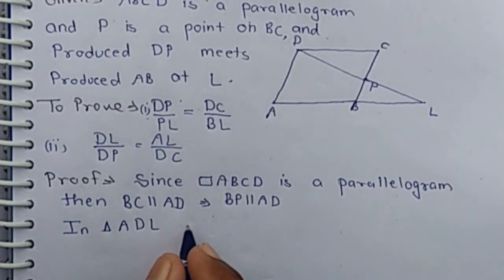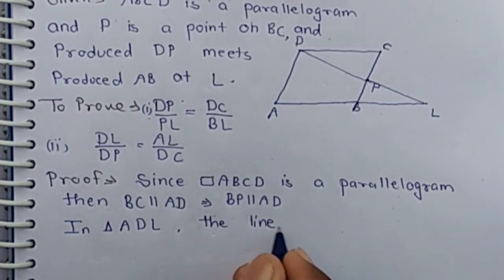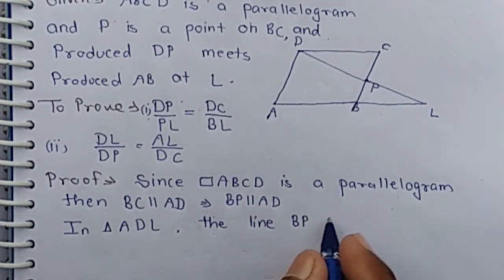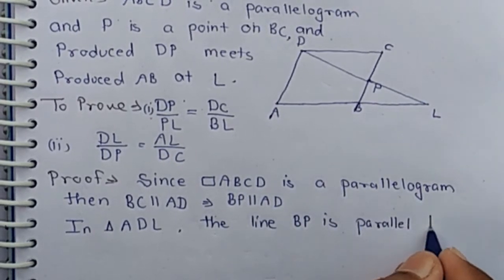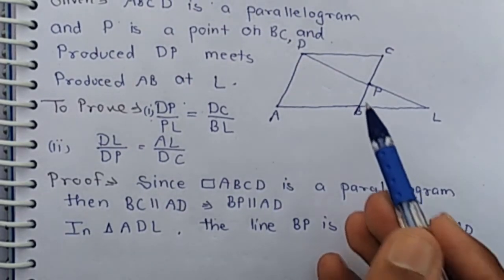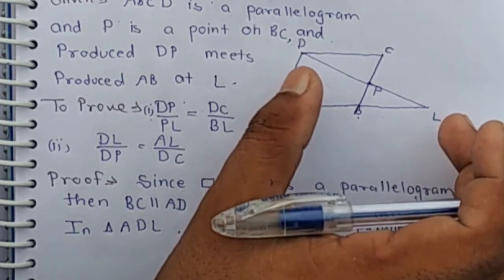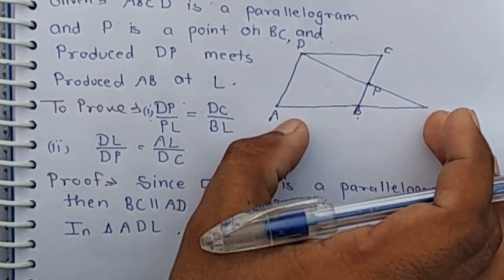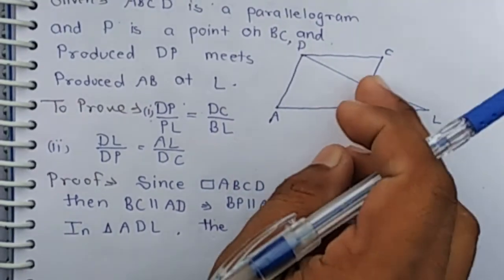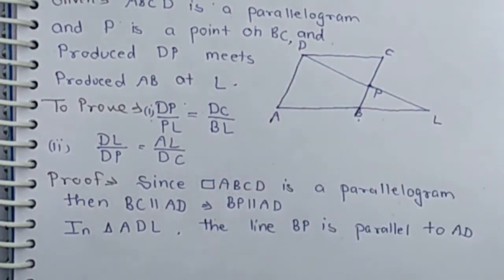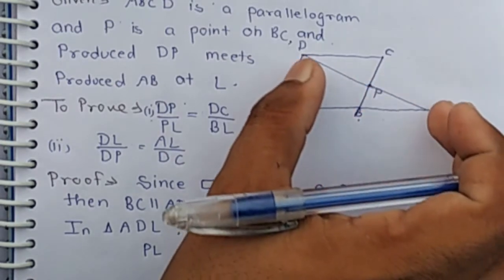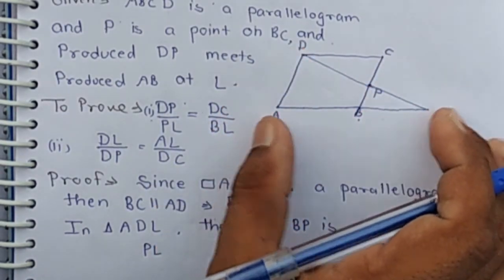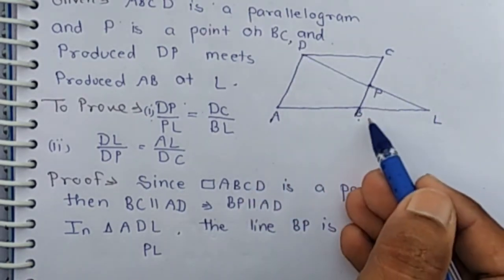Now in triangle ADL, the line BP is parallel to AD — wait, BP is parallel to AD, and it intersects the sides DL and AL. By the Basic Proportionality Theorem, BP divides the other two sides in the same ratio. Therefore PL by PD equal LB by AB.